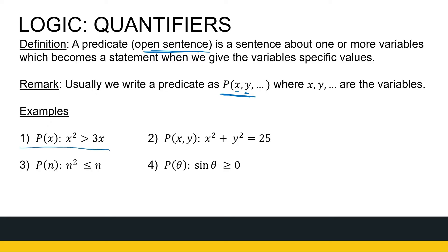Let's take a look at this first example. P of x: x squared is greater than 3x. That can only be a statement if I know something about x, so this is a predicate — it's a sentence about x. As soon as I tell you what x is, it becomes a statement that can be tested as true or false. Similarly, x squared plus y squared equals 25 is a predicate. These are all open sentences; we cannot test them as true or false unless we have specific values or know where the variables come from.